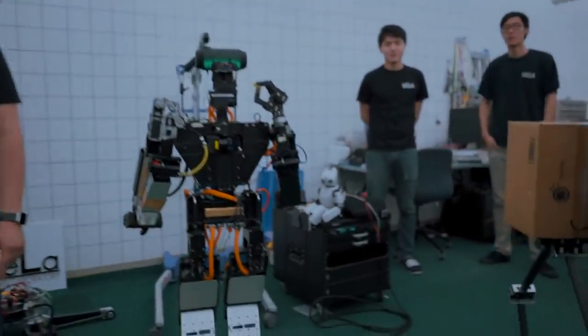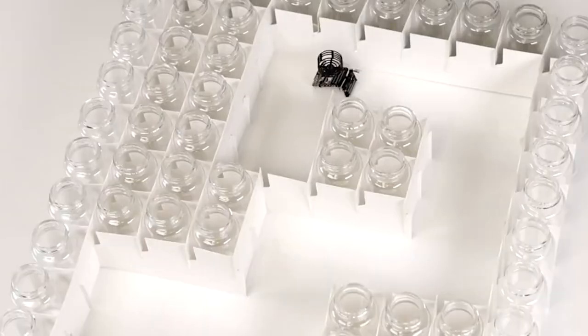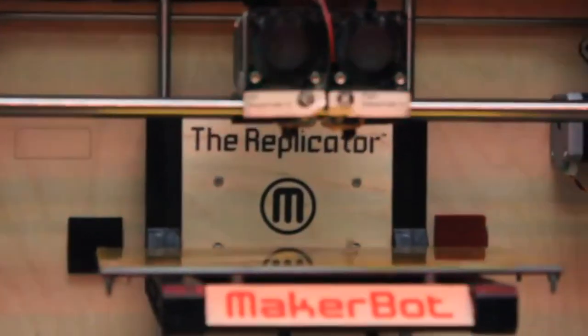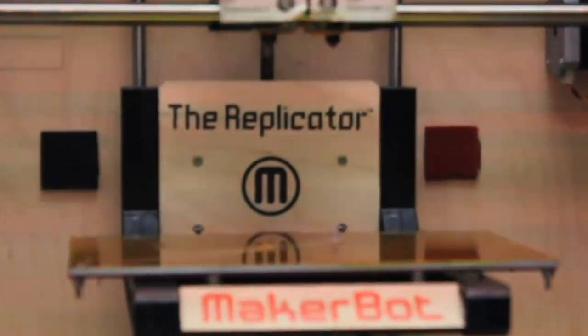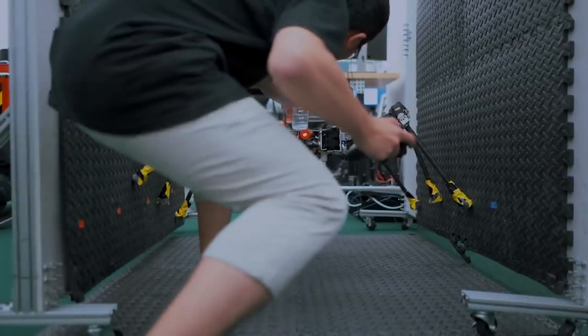To do this, the scientists turn to metamaterials, which are materials that have electromagnetic properties not found in a natural environment. Capable of crawling, jumping, and sensing the elements around them, the UCLA robots are able to evolve in their immediate environment.